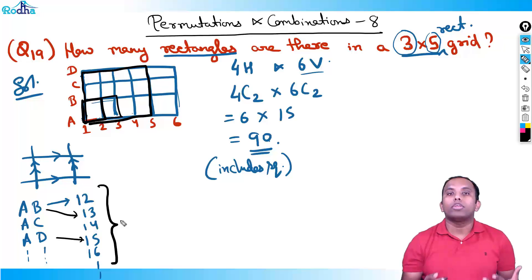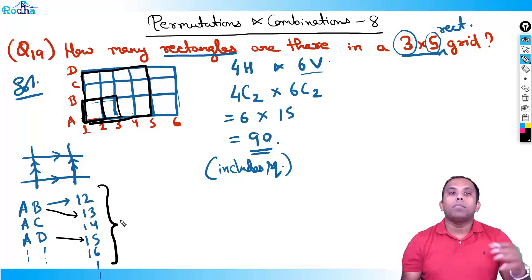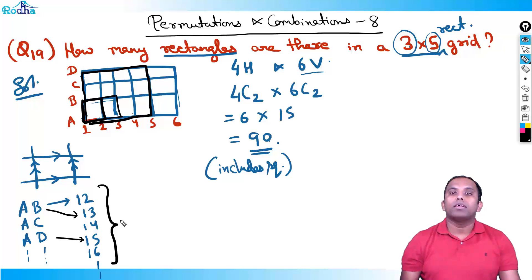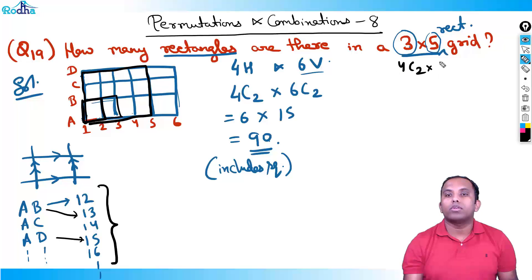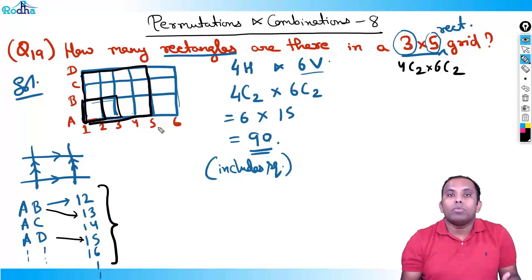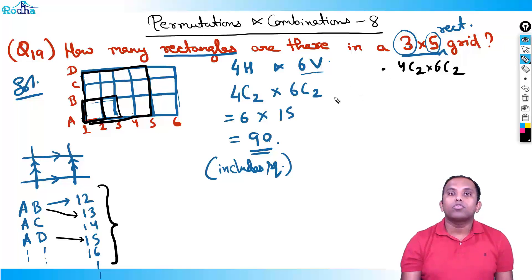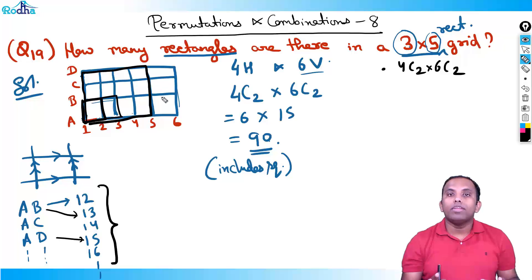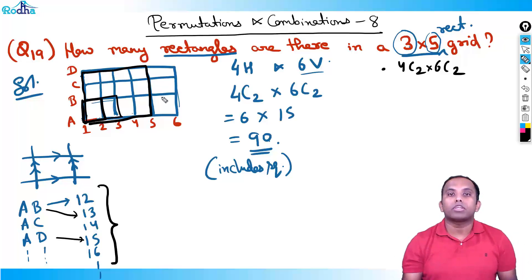Don't learn by heart — create logic and increase your IQ level. There is a general formula in every book: for an A×B grid, the number of rectangles is (A+1)C2 × (B+1)C2. But understanding why this works is what matters. People who only memorize formulas miss the confidence, logic, and IQ level that come from understanding.